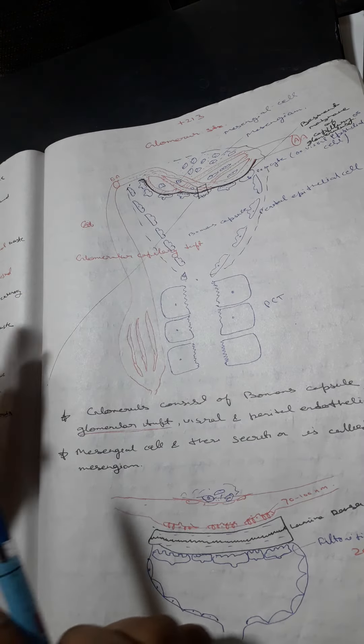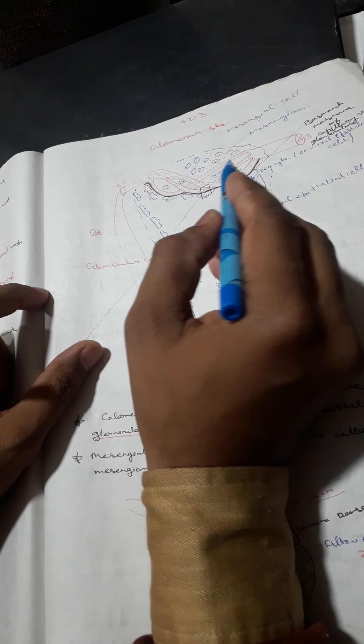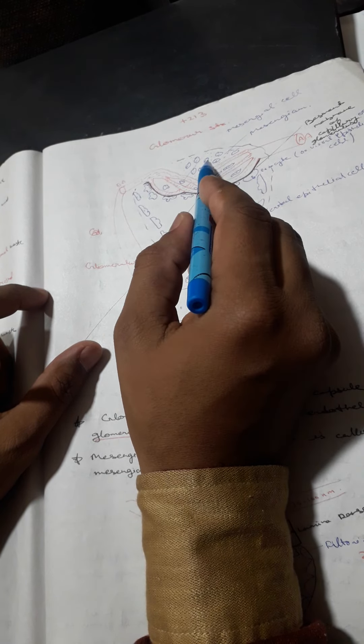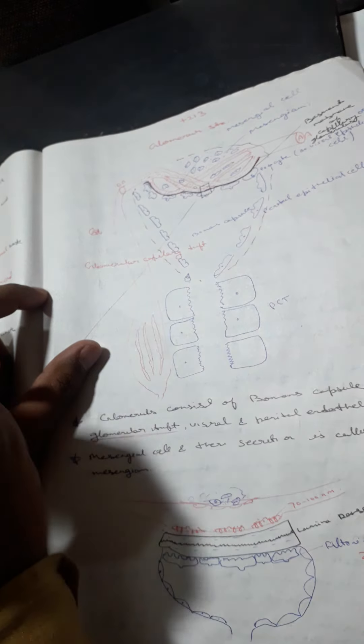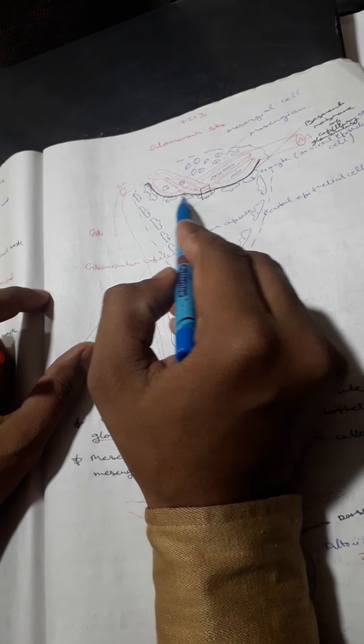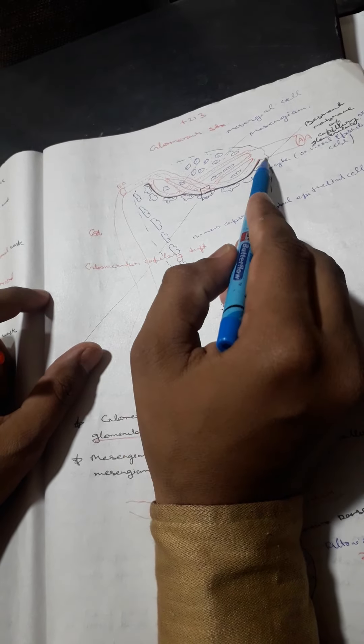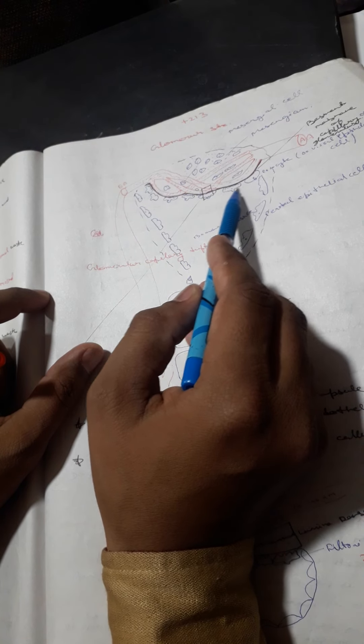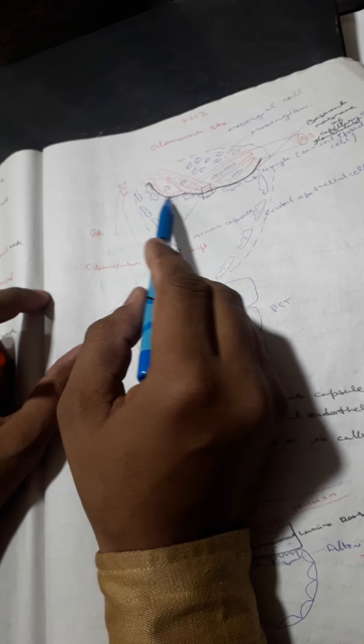In between the glomerular capillaries, mesangial cells are present. The glomerular capillaries are surrounded by the glomerular basement membrane, shown here in black. This entire structure is enclosed within Bowman's capsule, and the outer cells lining Bowman's capsule are called epithelial cells.